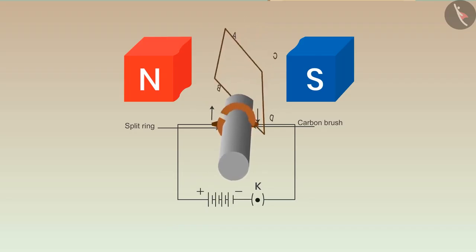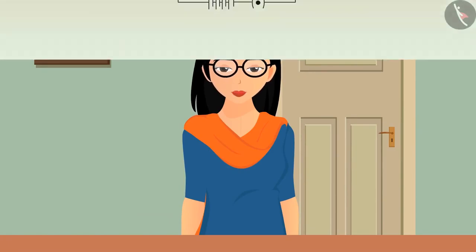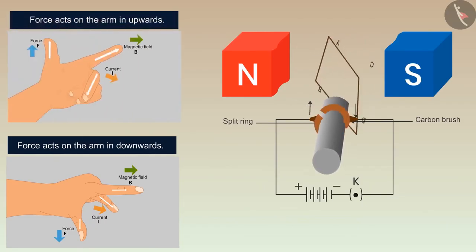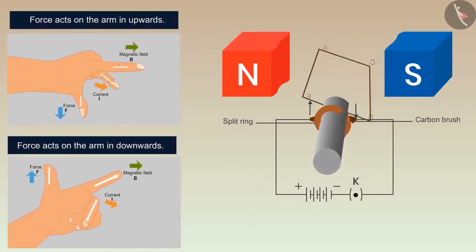Also, the force acted on the arms AB and CD will help the motor to keep rotating in one direction by changing its direction. When the current flows through the circuit, then a force acts on the arm AB and CD in downwards and upwards direction respectively. After half the cycle, the force acted on CD and AB in downwards and upwards direction respectively, and the cycle repeats itself.